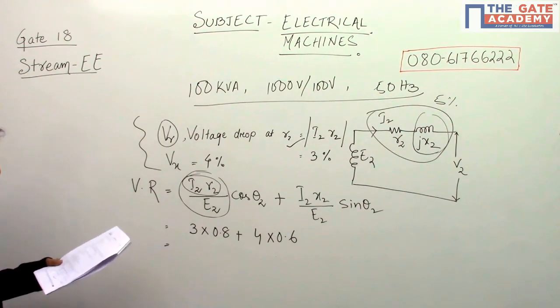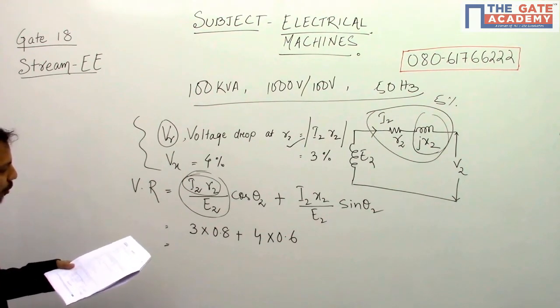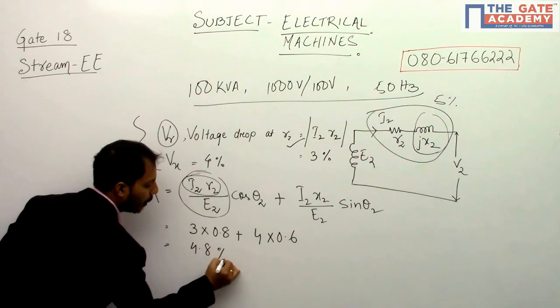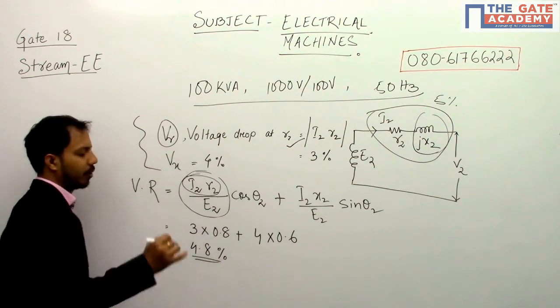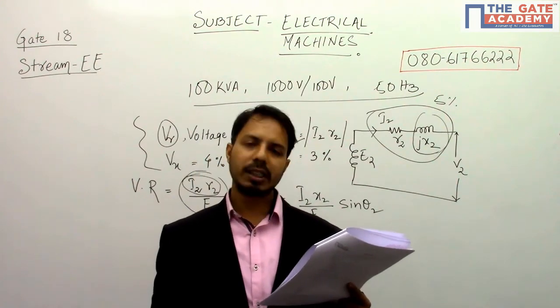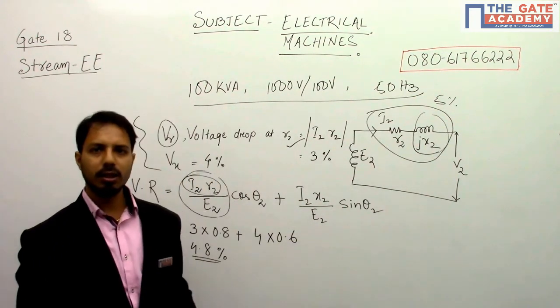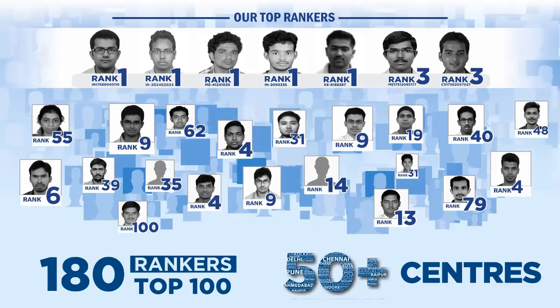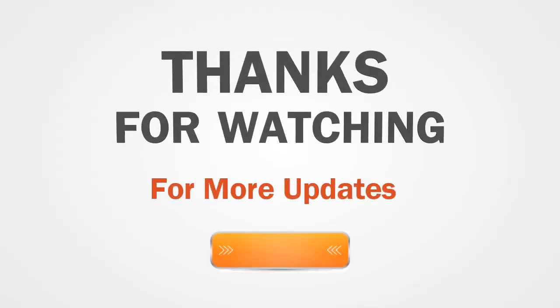So now if we calculate this, we will get it as 2.4 plus 2.4, that is 4.8 percent. Now if we see the option A, which is given as 4.8 percent, this is the solution.